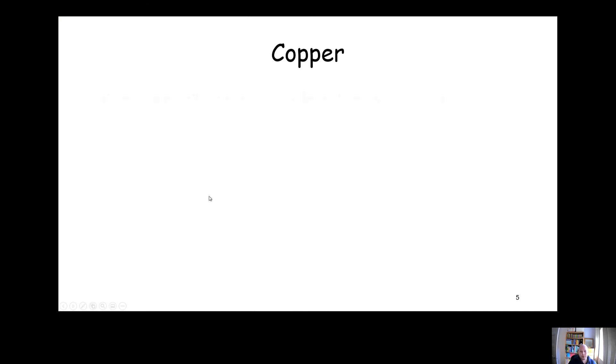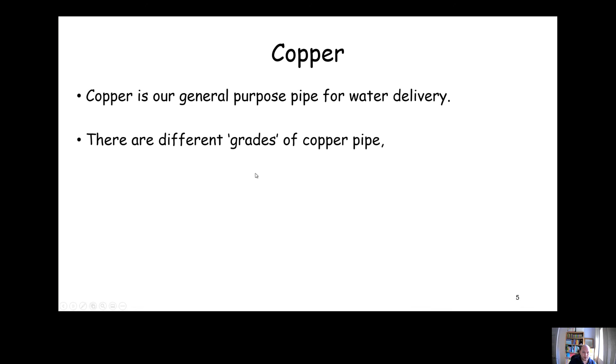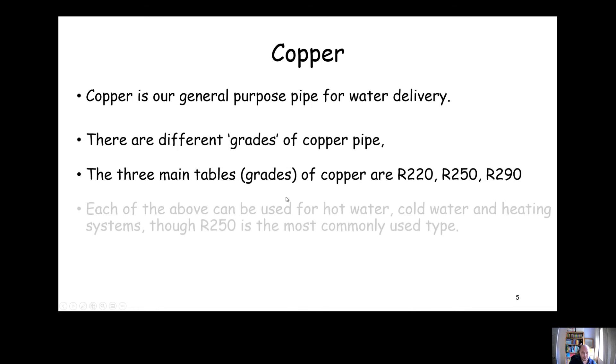Copper is a general purpose pipe used for water delivery. There's three different grades of copper, some people call them tables of copper: R220, R250, and R290. We can use each of them for hot, cold, and heating, though R250 is the most commonly used type.